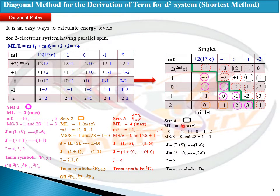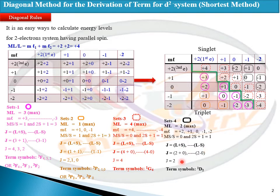The fourth set also lies above the diagonal where the maximum ML value is two, running from plus two down to minus two. MS is again zero, so spin multiplicity is one (singlet). L is two and S is zero, giving J equal to two. The term symbol in this case will be ¹D₂.